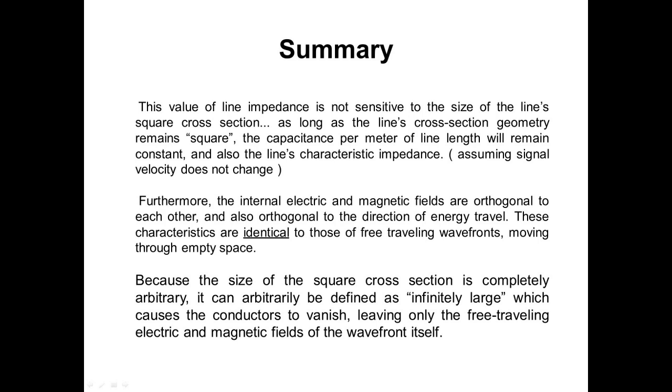This value of impedance is not sensitive to the size of the line's square cross-section. As long as the line's cross-section geometry remains square, the capacitance per meter of line length will remain constant and also the line's characteristic impedance, assuming the signal velocity does not change. Furthermore, the internal electric and magnetic fields are orthogonal to each other and also orthogonal to the direction of energy travel. These characteristics are identical to those of free-traveling wavefronts moving through empty space.